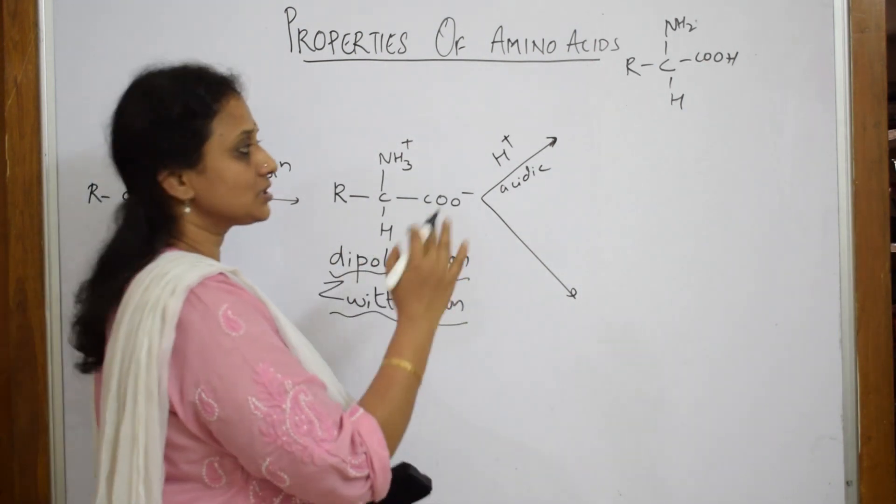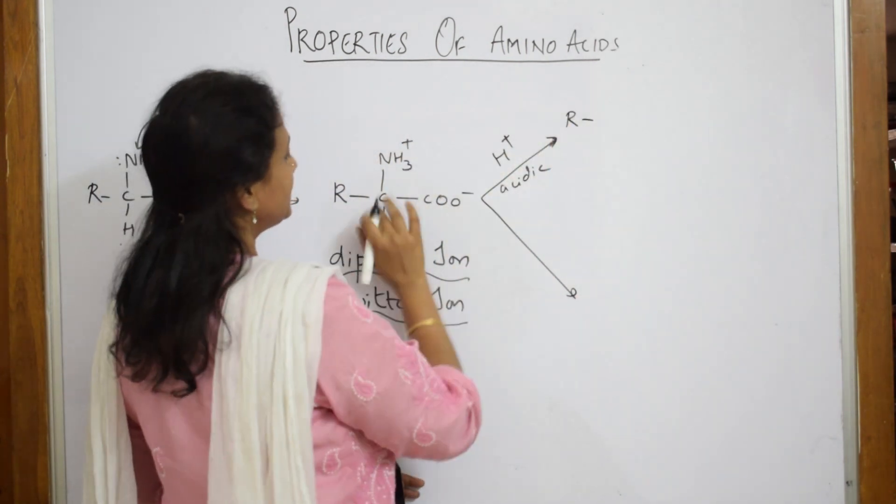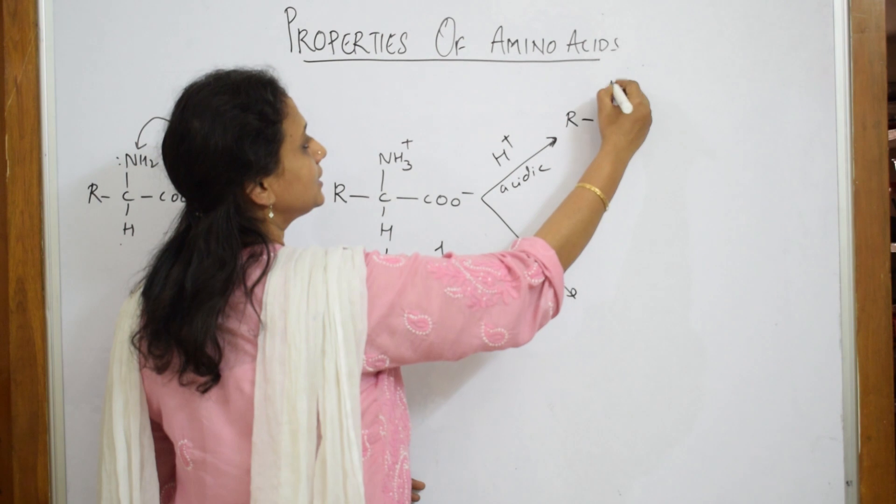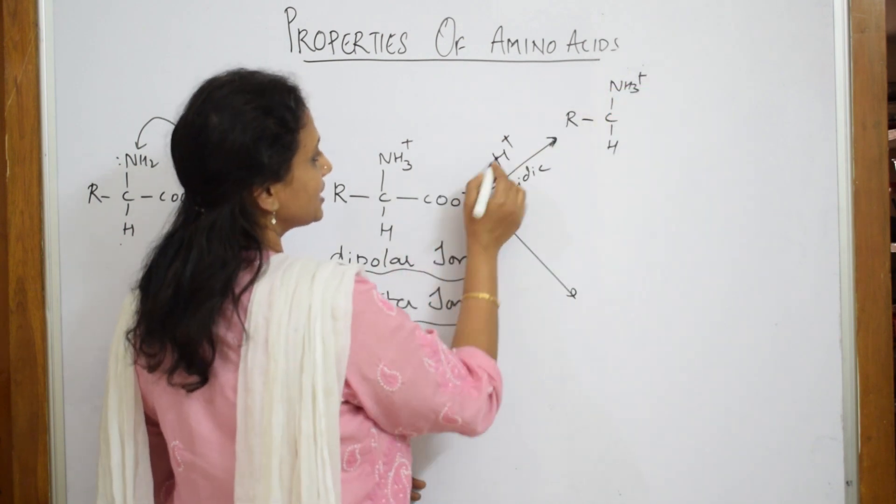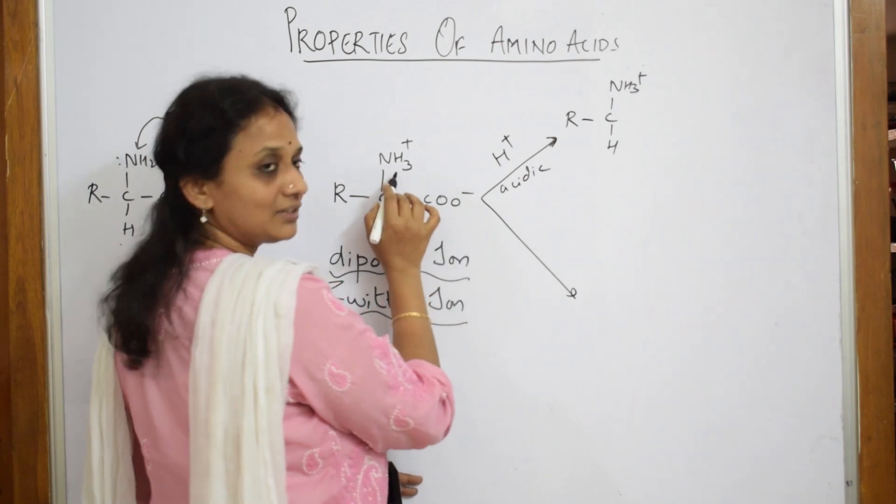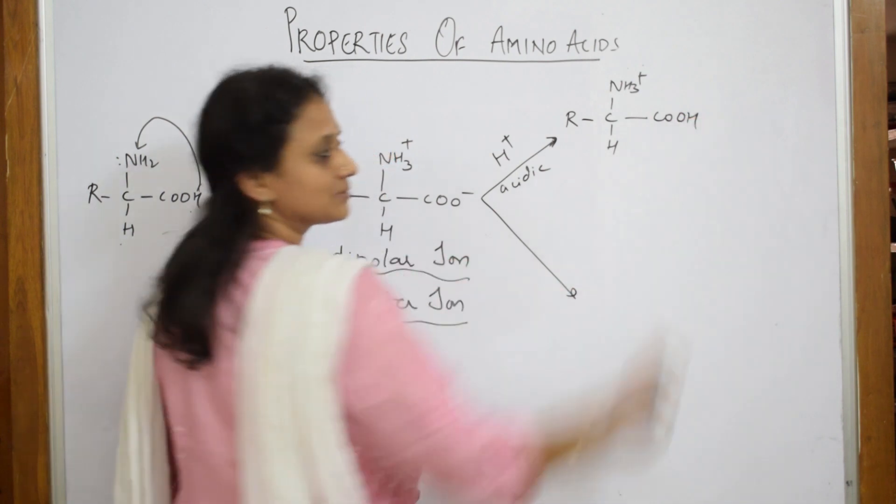When I am going to take this zwitterion in an acidic medium, how does the structure look like? The structure looks like: your R is here, your carbon is here, NH3 plus is here, and this H plus goes and attacks here. Why not here? Positive and positive, no. Cation and anion, so this becomes COOH.